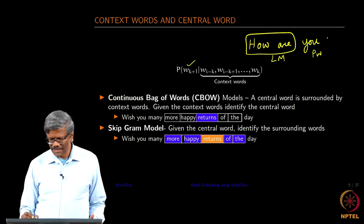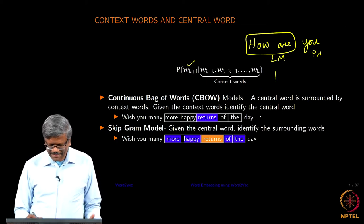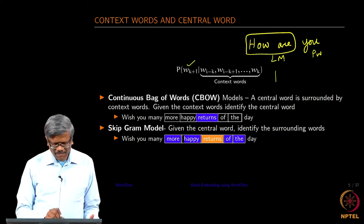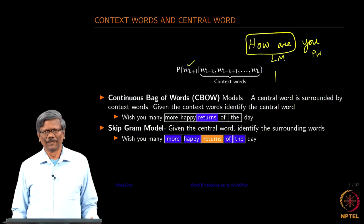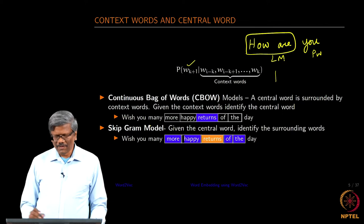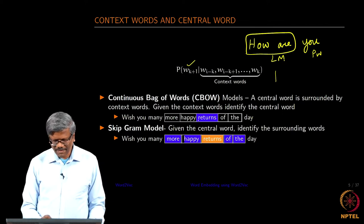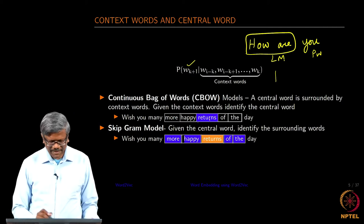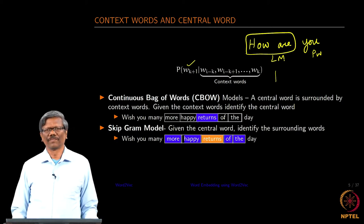In the case of continuous bag of words, we have an example here at the bottom: 'wish you many more happy returns of the day.' This is the sentence I want to process. I am taking the window size as 5, and the central word is the one which I want to identify given the context words: 'more', 'happy', 'of', 'the'.